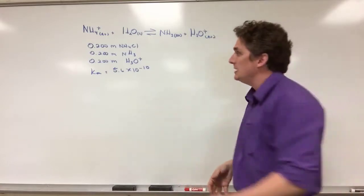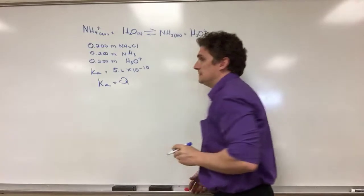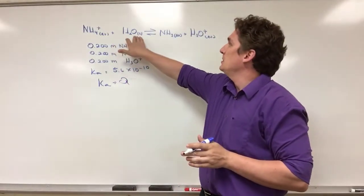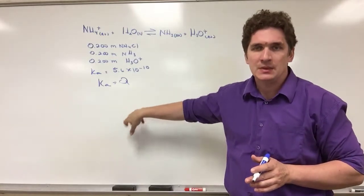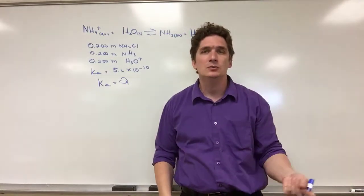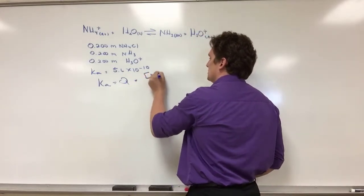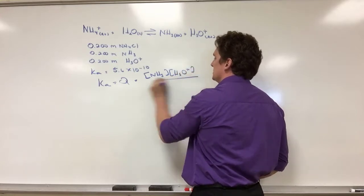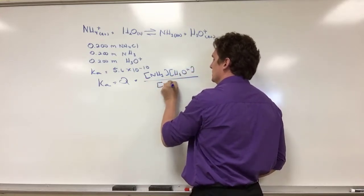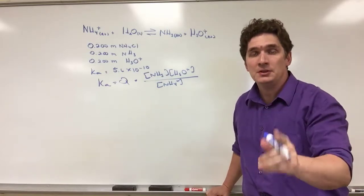The first thing they say is, well I know Ka has to equal Q. So for this reaction, ammonium protonating water to give us ammonia and H3O plus, I know at equilibrium Ka has to equal Q. Second thing you always tell me is, well I need to know the expression for Q. So they write it out: concentration of NH3 times concentration of H3O plus all over concentration of NH4 plus. But well there's also one other thing you always tell me to write out, and that's my ICE table, so they build their ICE table.